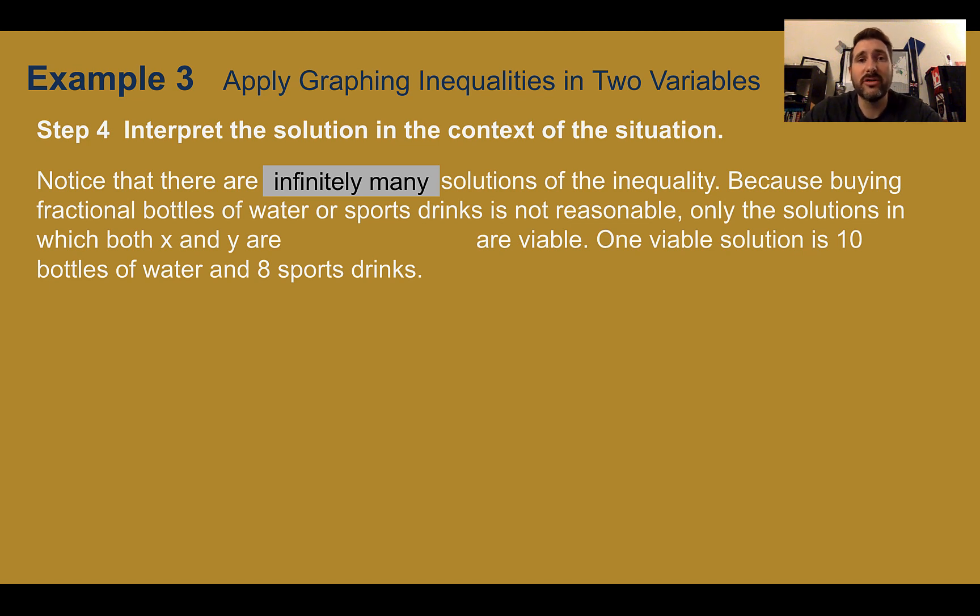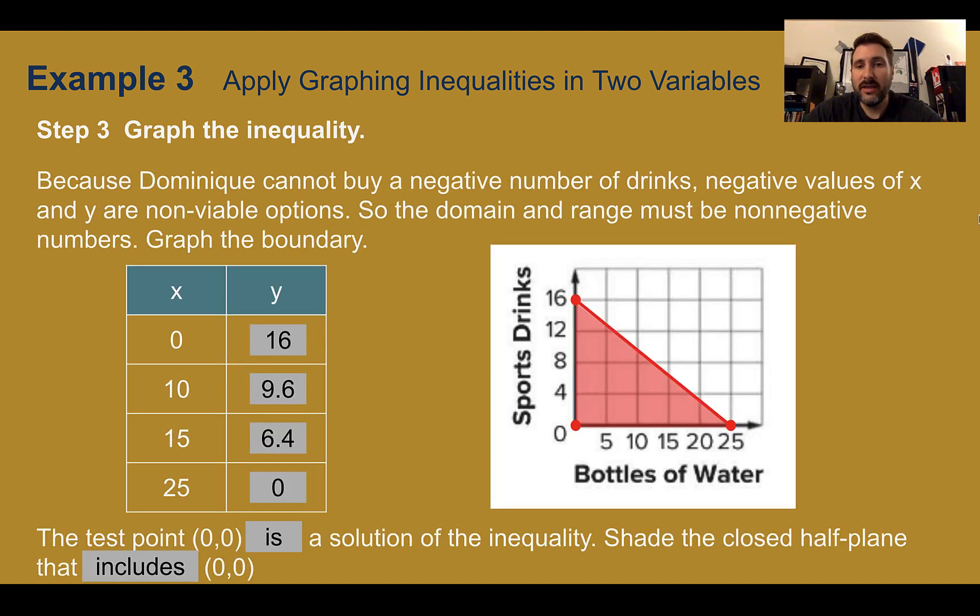So one possible solution would be 10 waters and 8 sports drinks. If we go back and look, we could have 10 waters, 8 sports drinks. That coordinate fits in that shaded area. We could have 5 waters and 12 sports drinks. That fits in the shaded area. We could have 15 waters and 4 sports drinks. We could have 5 and 4 or 5 and 8. Anything that fits perfectly in here, we could buy. There might be some others that are between, but these are ones that are obvious from this picture.